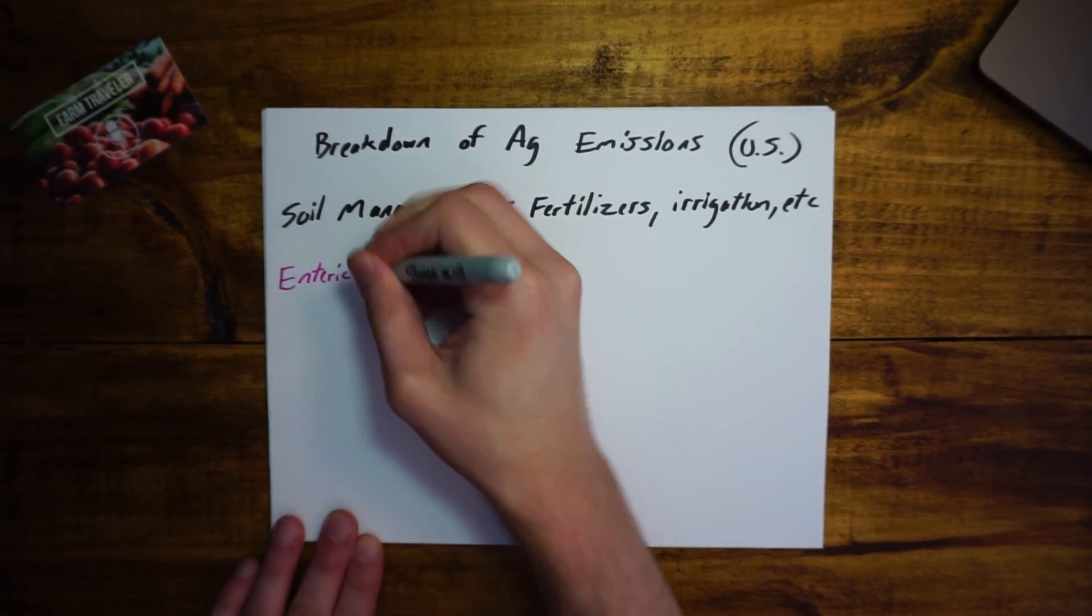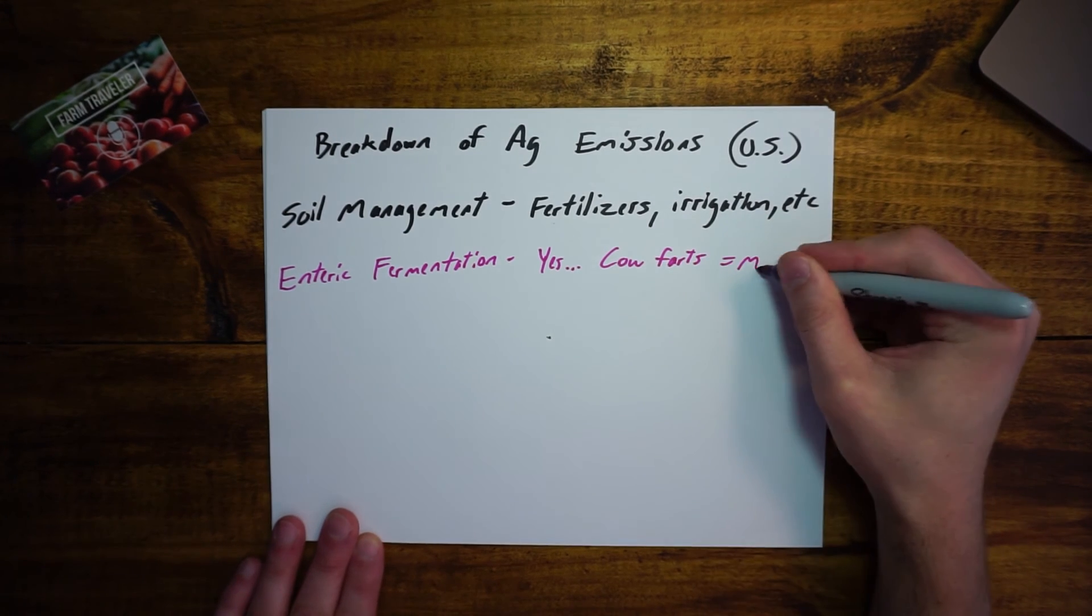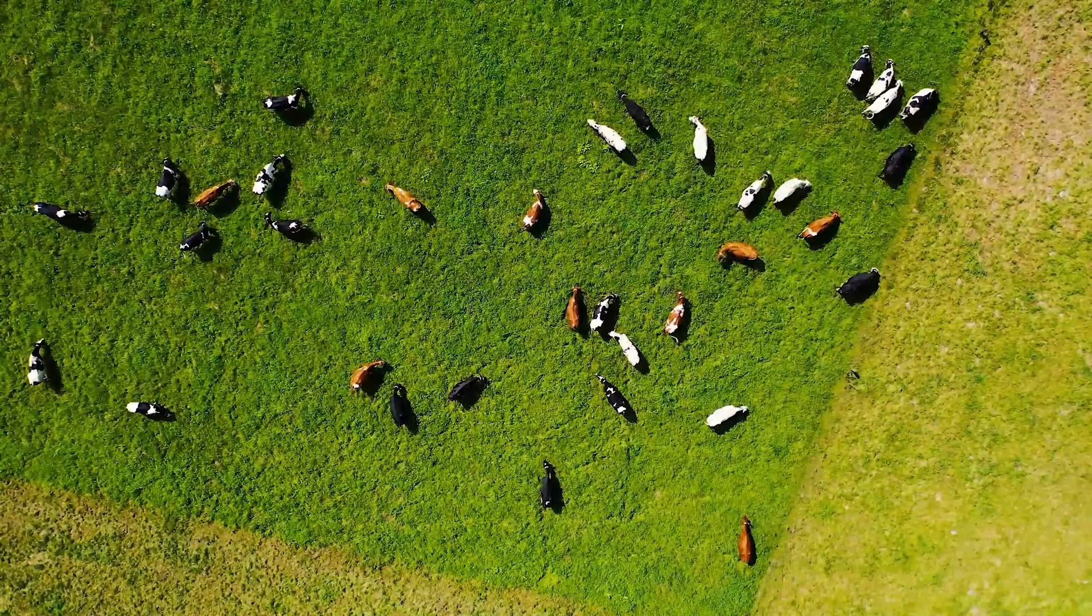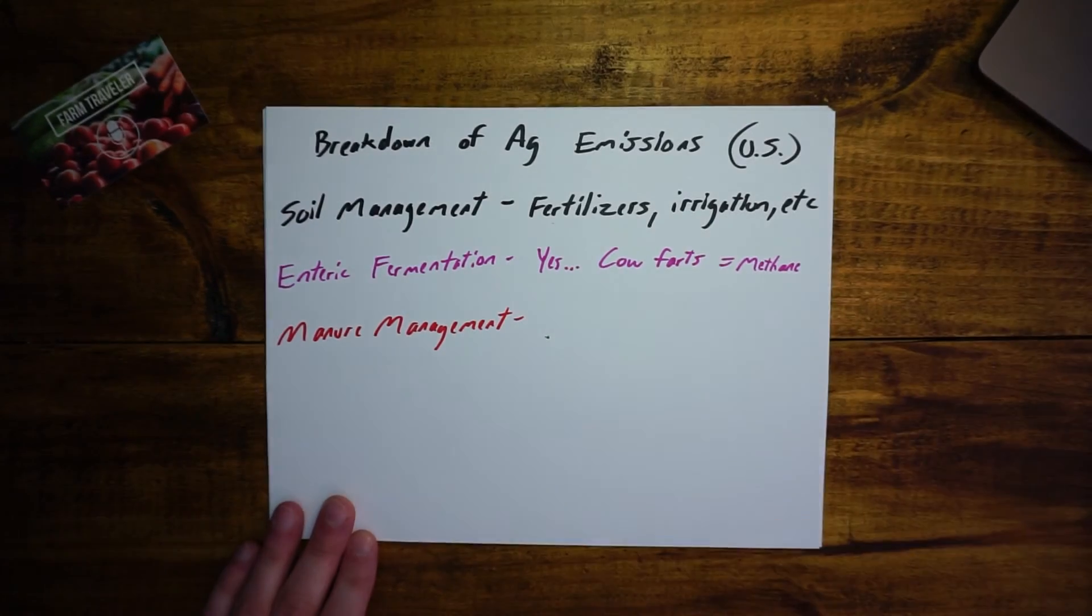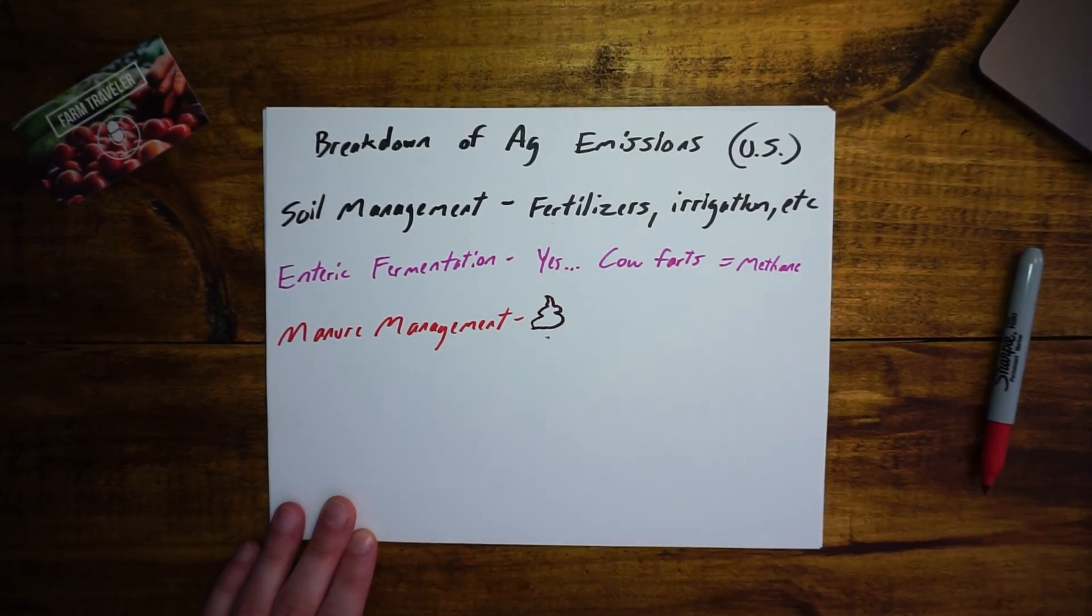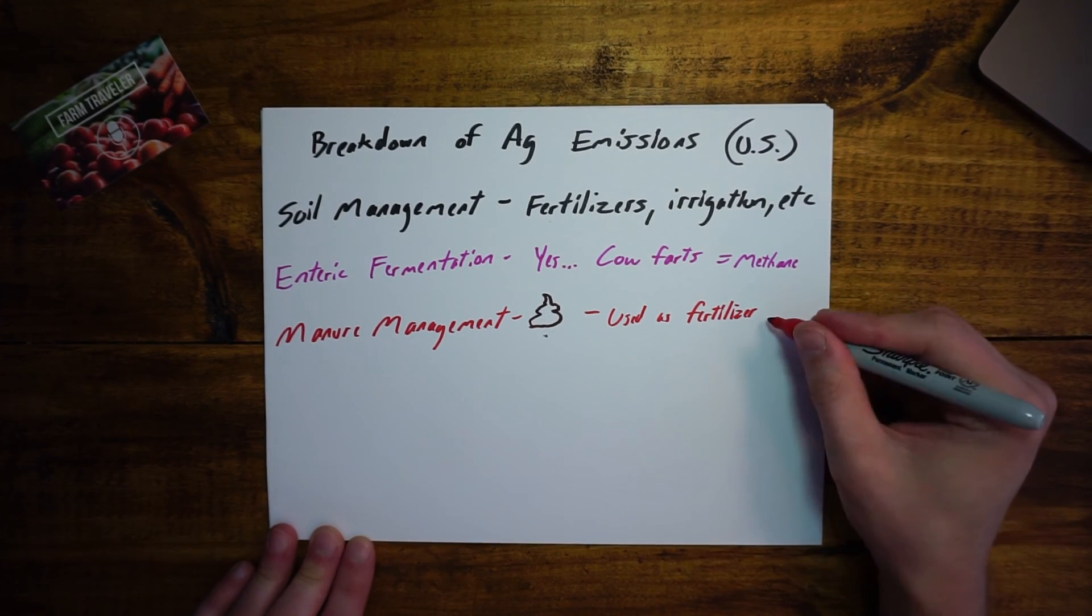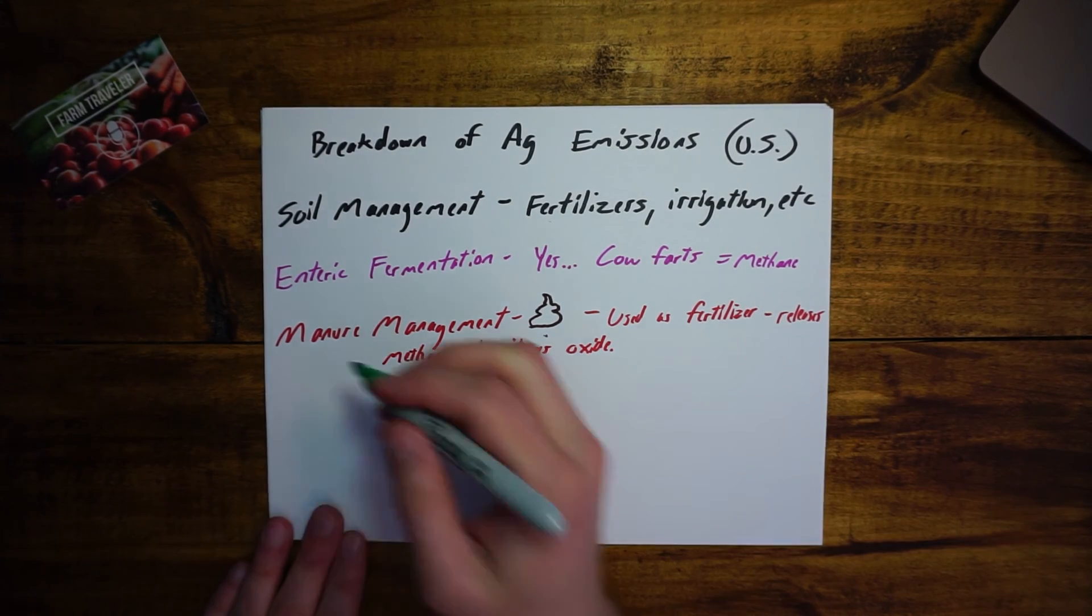Another one is enteric fermentation. Pretty much this is cow farts. Cows are ruminants, meaning they have four stomachs that break down their food. This digestive process creates methane, and once farted or burped out by cows, releases methane to the atmosphere. The next one is manure management. Most livestock operations store their animal manure somewhere to be later used as a natural fertilizer for crops. When stored, however, this waste decomposes and emits gases like methane and nitrous oxide.